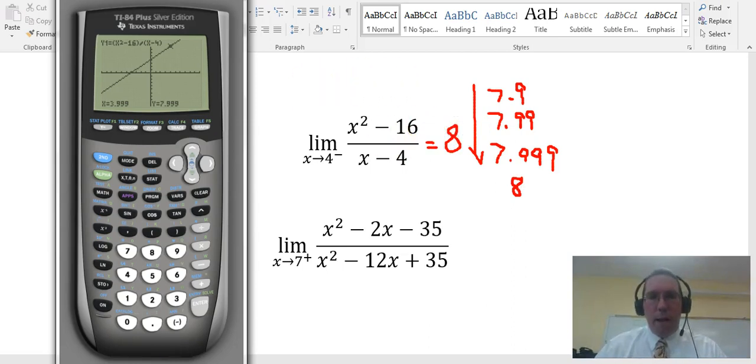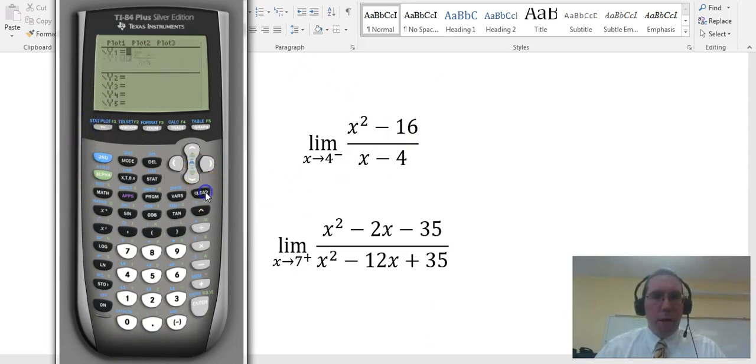Alright, let's try another one now. Let's go over to back to y equals. We'll clear this, and now we're going to try this one right here. This limit as x approaches 7 from the right, from the positive side of 7. And so we're going to be looking at numbers larger than 7, but very close to 7, and moving backwards, getting closer to 7. So we're going to key in 7.1, then 7.01, then 7.001.